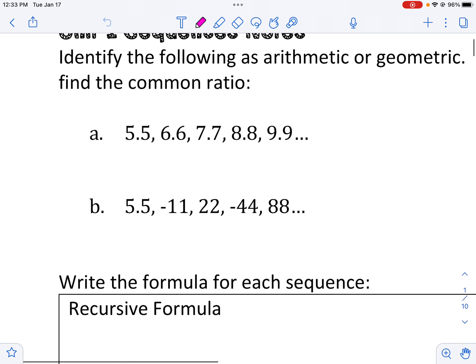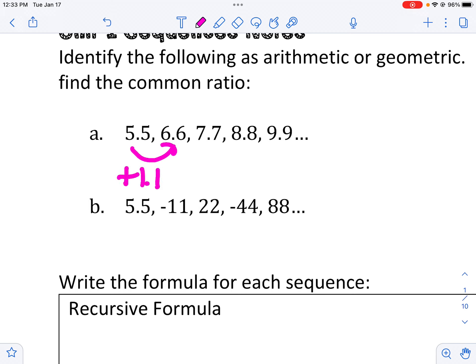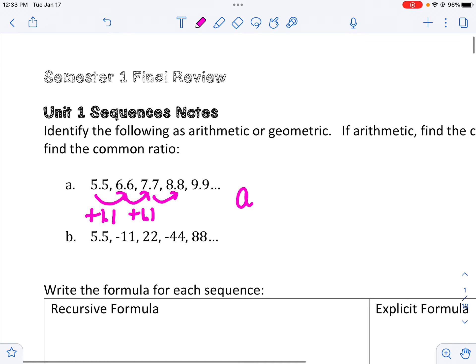So if we take a look at the first one, we can see that it's going up by adding 1.1 every time. And that works every single time. So this would be considered arithmetic.